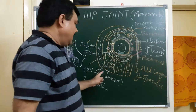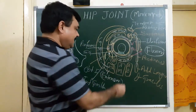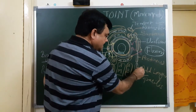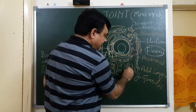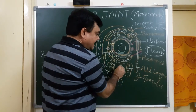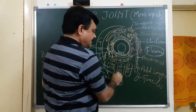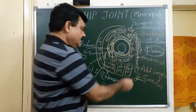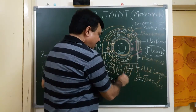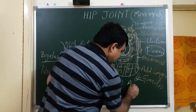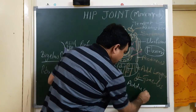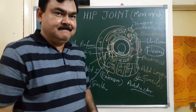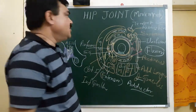The adductors at the hip joint are adductor longus, adductor brevis, adductor magnus, pectineus, and gracilis. The three main adductors are the adductor group, and pectineus and gracilis are the supporting adductors.